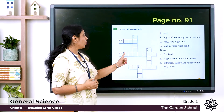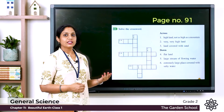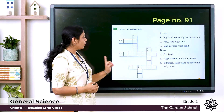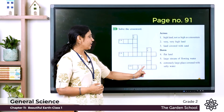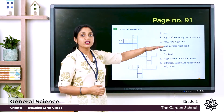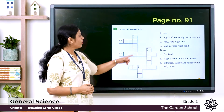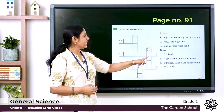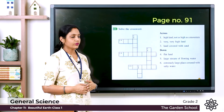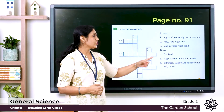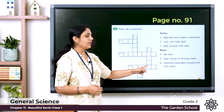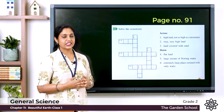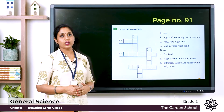Across number two: write M-O-U-N-T-A-I-N. Across number three: land covered with sand — the answer is desert. Write D-E-S-E-R-T in box number three. Down number four: flatland — the answer is plains. Write P-L-A-I-N. Down number five: large stream of flowing water — the answer is river. Write R-I-V-E-R. Down number six: extremely large place covered with salty water — the answer is sea. Write S-E-A.